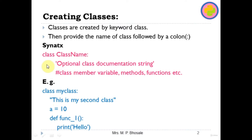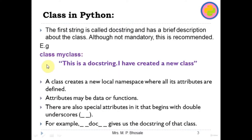This is how you write a class in Python. The first string is called the doc string and has a brief description about the class. The doc string is not mandatory — it is optional — but it is recommended for further reference so you can write the purpose of the class. A class creates a new local namespace where all its attributes are defined, and those attributes are nothing but variables or methods, that is data or functions.